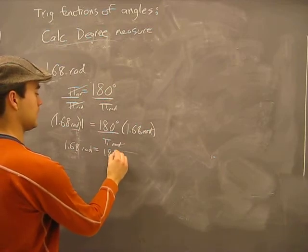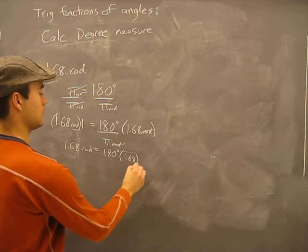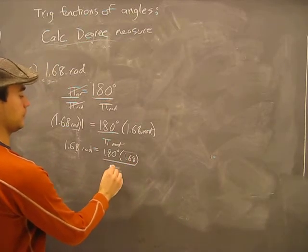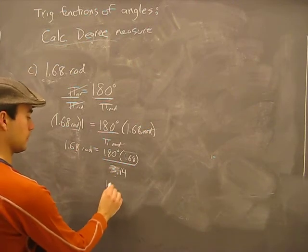180 degrees times 1.68 divided by pi. At this stage we can calculate it.